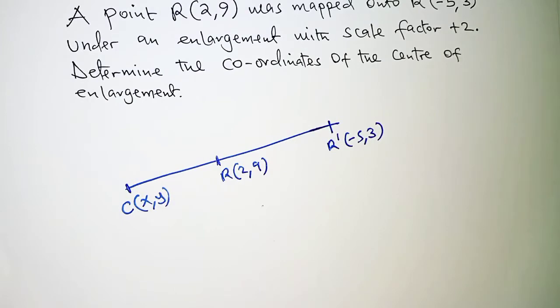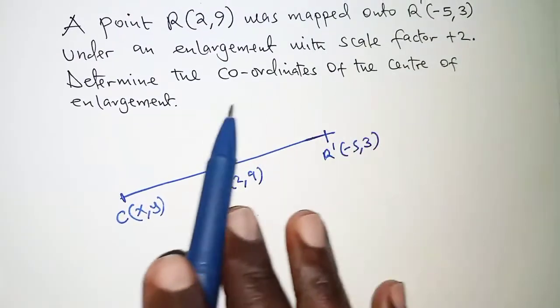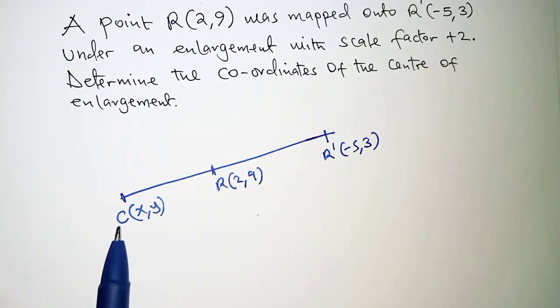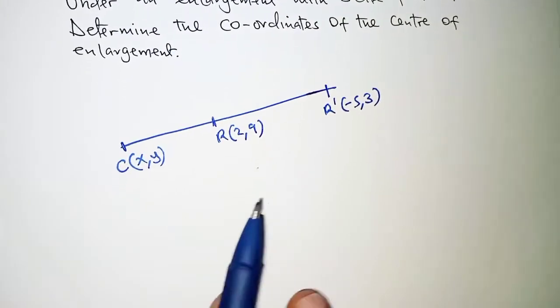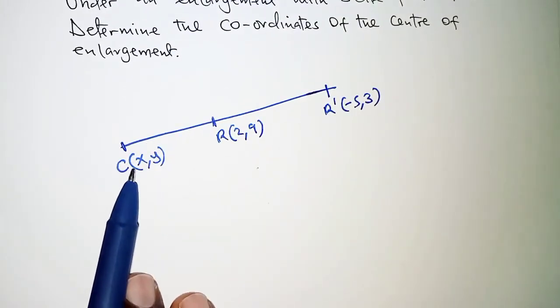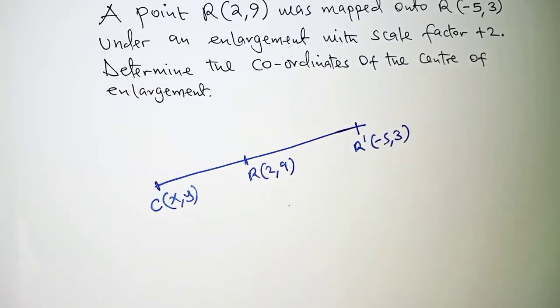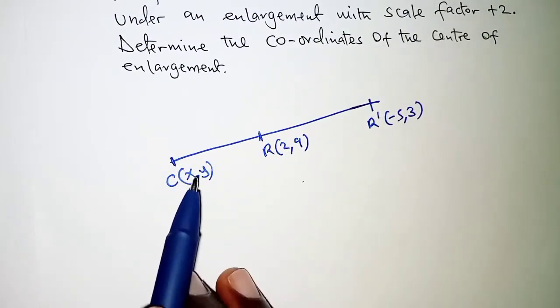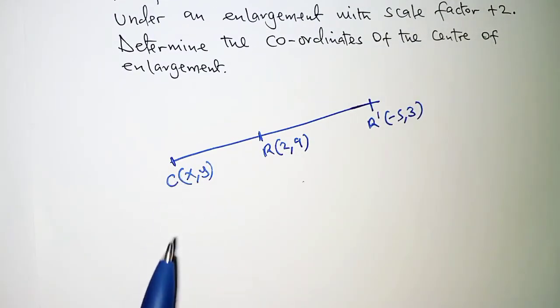From this, in order to get the coordinates of the center which in this case we have it as C, we are going to get the value of Y and X. This we are going to do independently for Y and X respectively.